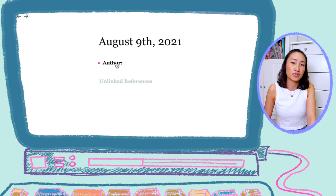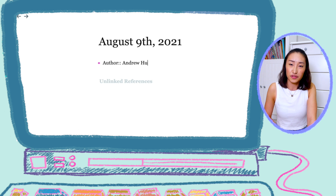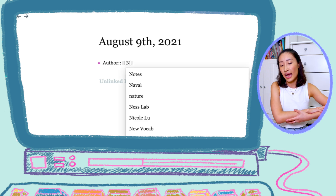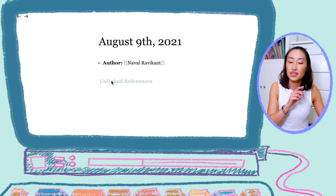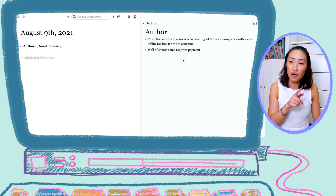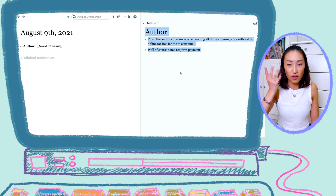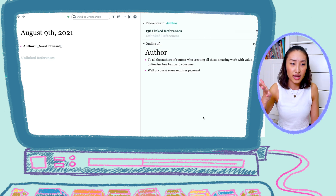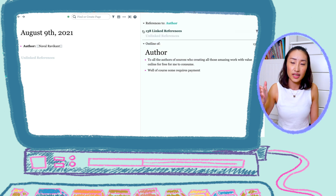I can click on the tag of authors and see all of the authors I have referenced in my Roam Research database. That's the attribute method — very useful for aggregating related references across your notes.